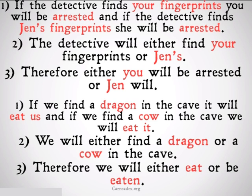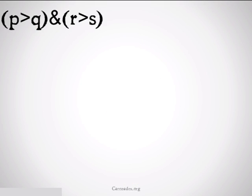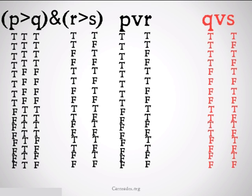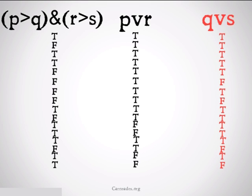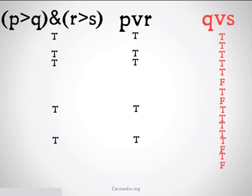If those are a little confusing and you like truth tables better, let's take a look at that. We take P implies Q and R implies S — that's the first premise. The second premise is P or R, and we can conclude Q or S. We build our truth tables up under them. Then we focus down on the truth tables that represent the two premises and the conclusion. We see there are only five cases in which both premises are true, and in all of those five cases, the conclusion is also true.